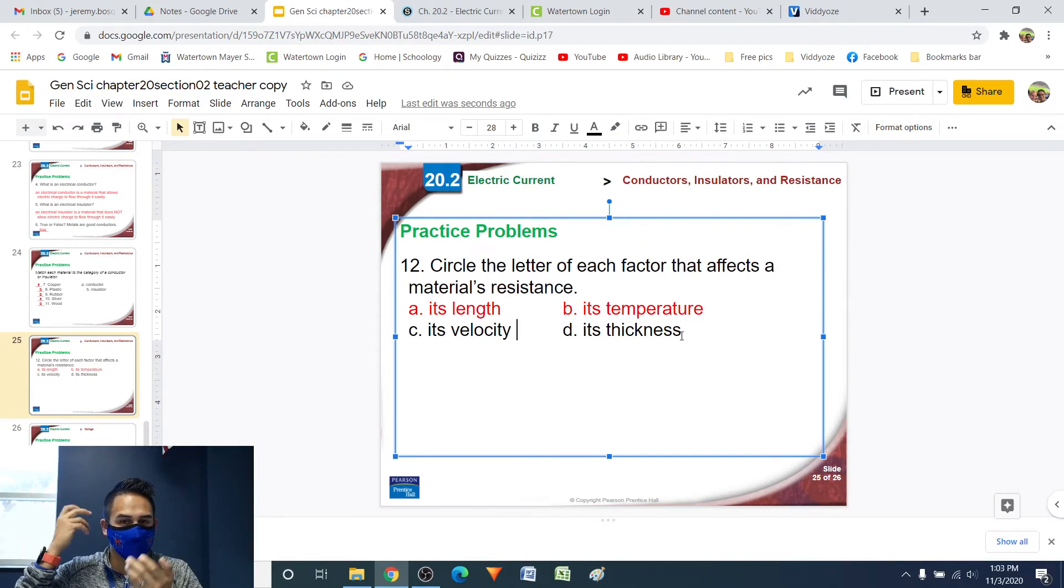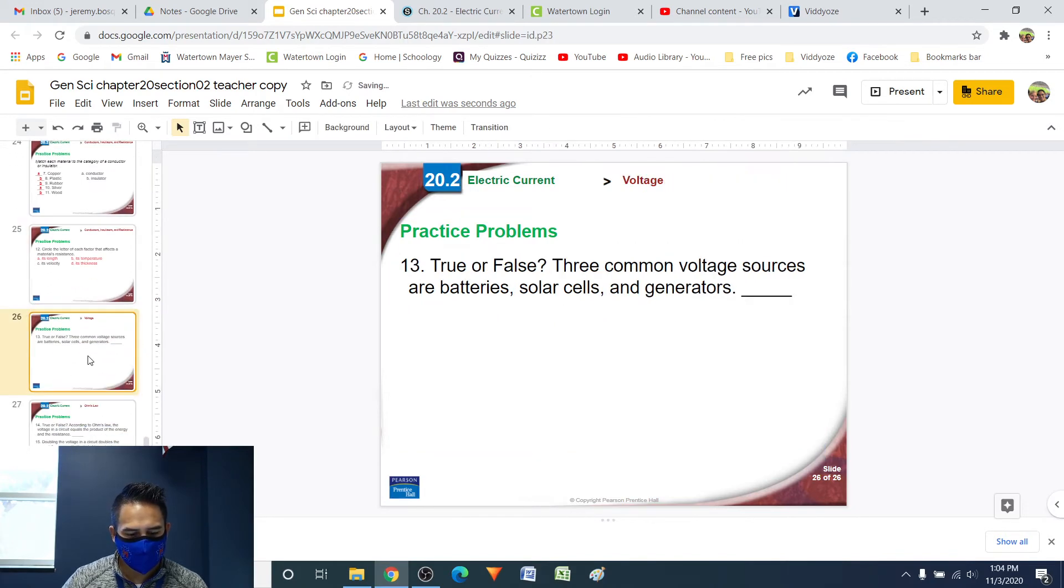So the thickness will also have an impact on how much resistance there is. The thinner a material, the thinner the tube, the thinner the wire, the more friction there is because there's not a whole lot of space to move. But the thicker the wire, the less friction there is because you have more space to move and it's easier to move through. So thickness is also a factor that will affect your resistance. The thicker the wire, the better.